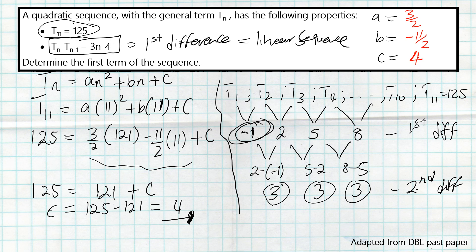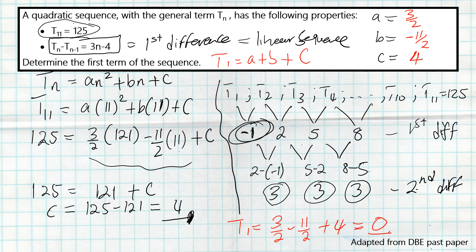Excellent — c is now 4. Now back to the question: determine the first term. We already expressed T1 = a + b + c. So T1 = 3/2 + (−11/2) + 4. Punching this into a calculator gives zero. The first term is actually zero — quite surprising! I hope you find this helpful, thank you.